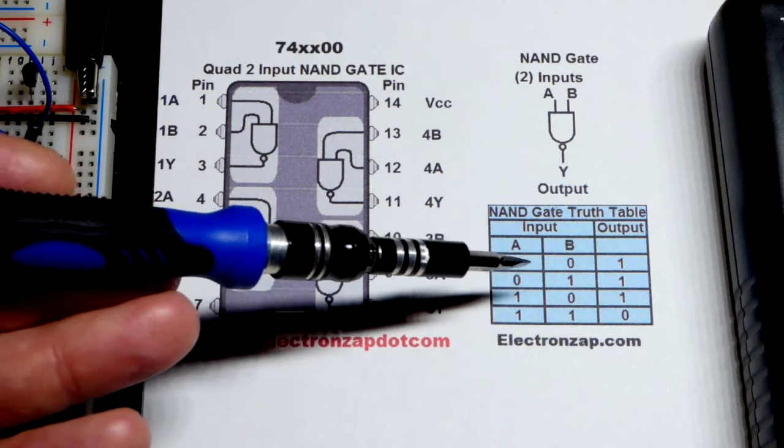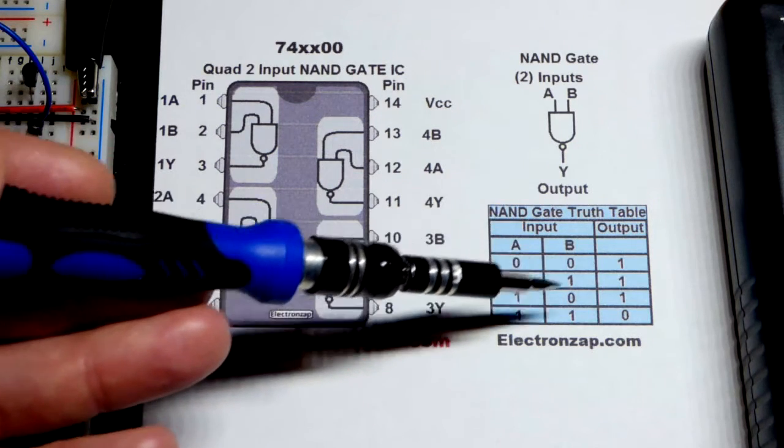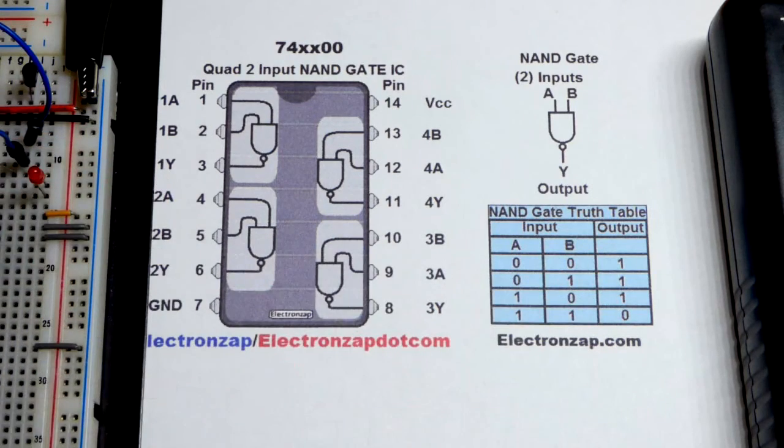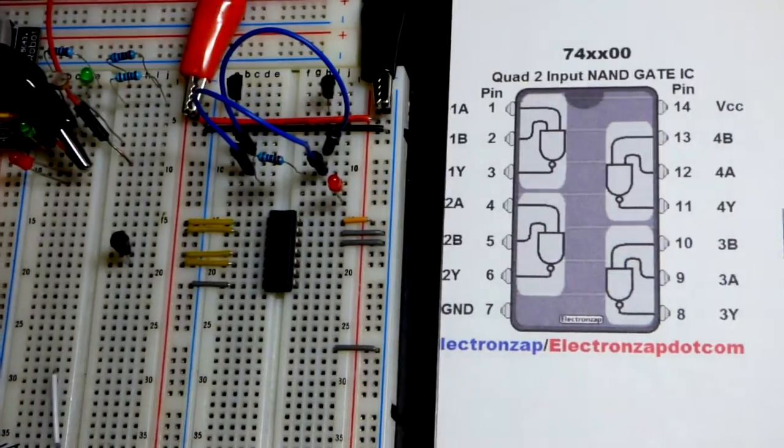So when any of the inputs are low, the output's high. If they're all high, all the inputs, then the output will be low. So it's the opposite of an AND gate. So I have it here.